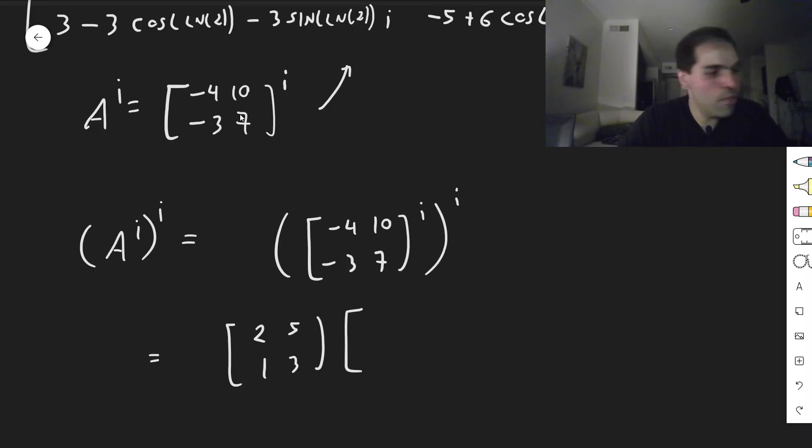And then remember, this was 1 to the i, 0, 0, 2 to the i. And then that becomes, so 1 to the i, 0, 0, 2 to the i, a 3, 5, so 3, 2, and then minus 5, minus 1.